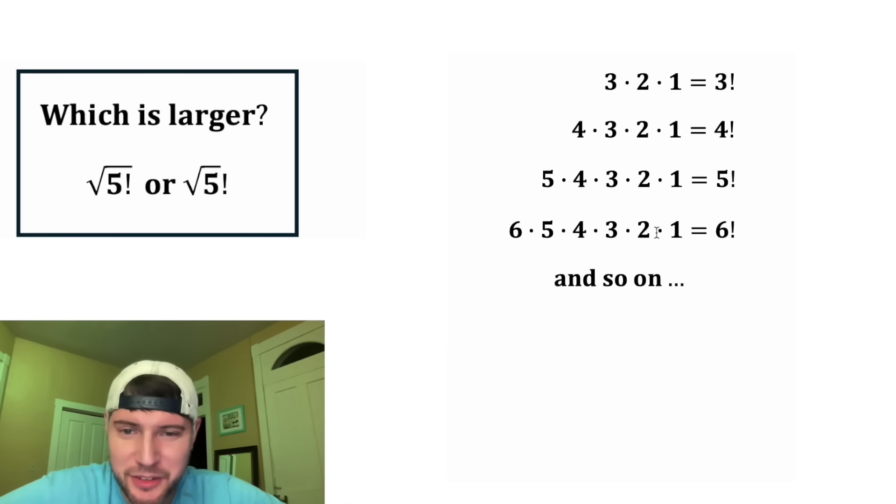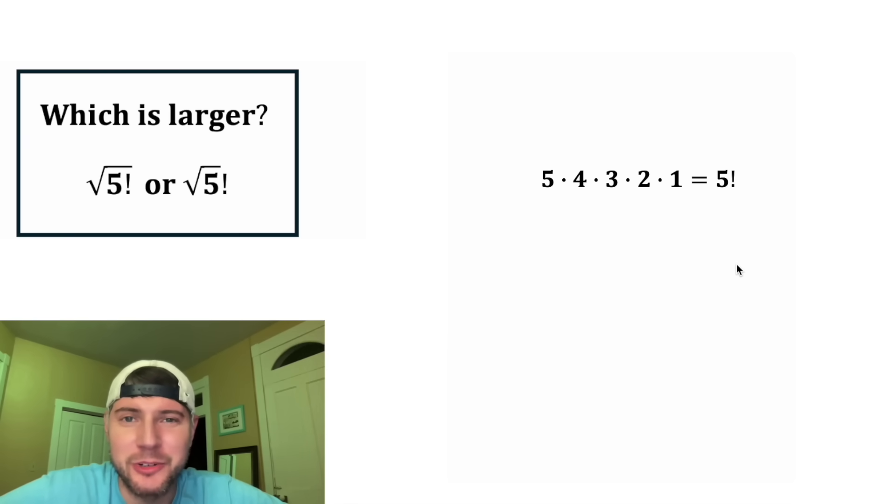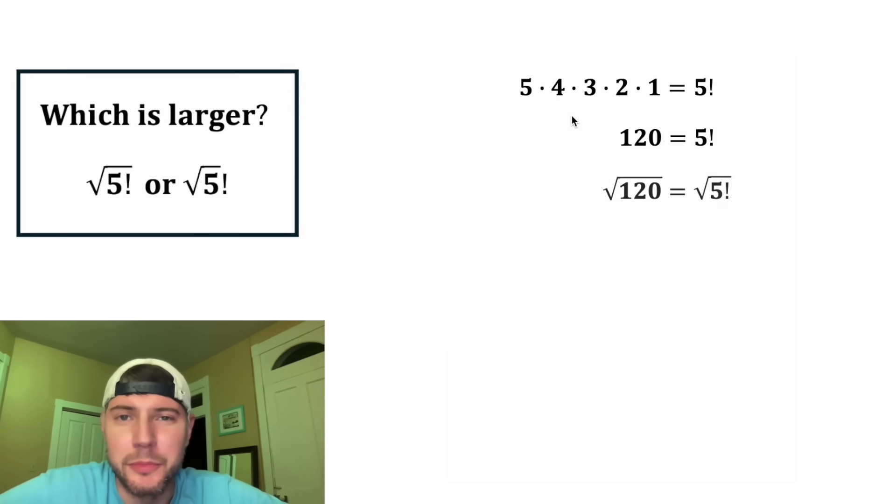And we're most specifically interested in this 5 factorial because that's what we have inside of the square root here. We can simplify this: 5 times 4 times 3 times 2 times 1 is 120. And then to make it look just like this first term, we can square root both sides. And now we have an exact value for the square root of the quantity 5 factorial.